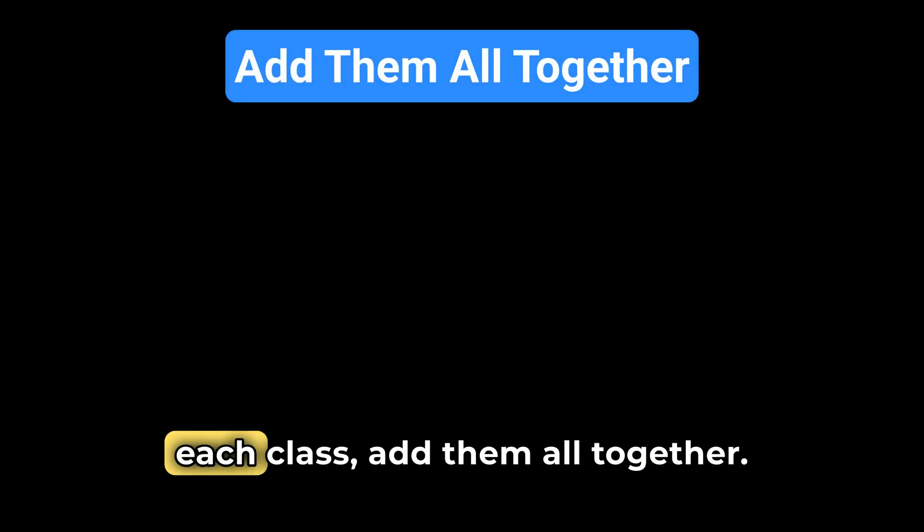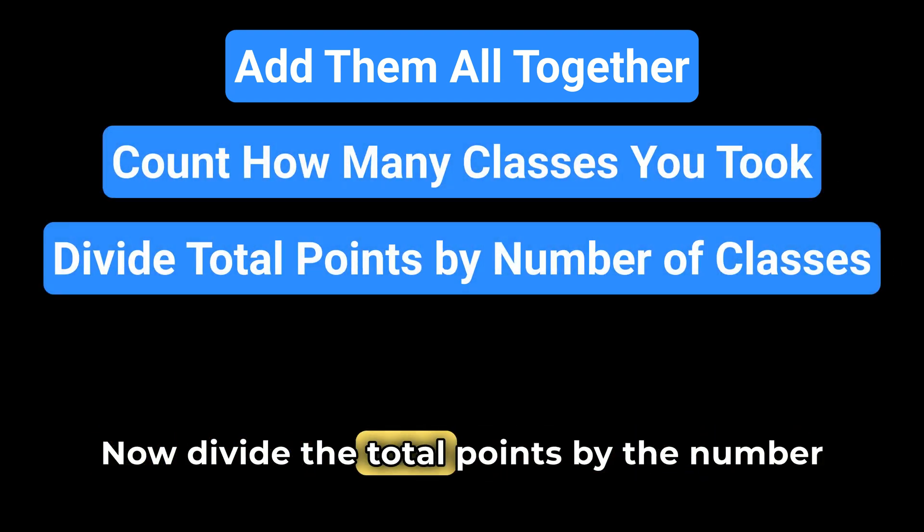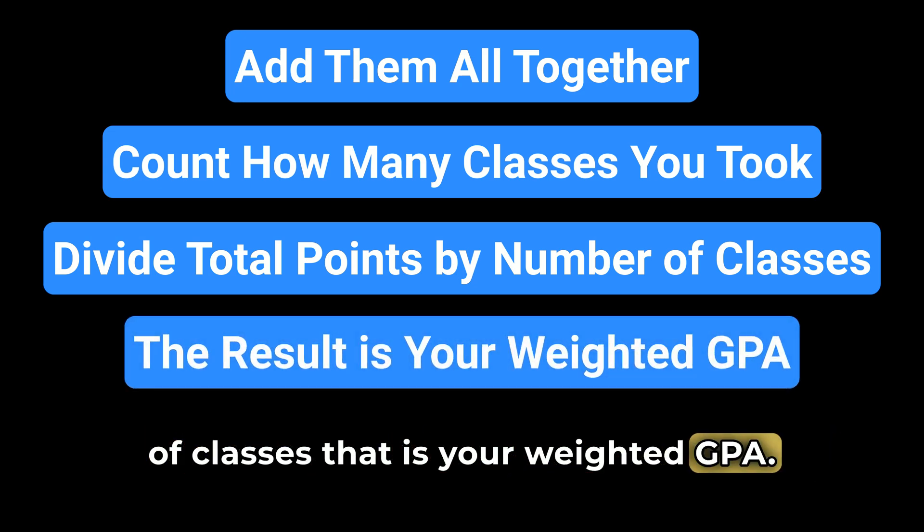After you have the points for each class, add them all together. Then count how many classes you took. Now, divide the total points by the number of classes. That is your weighted GPA.